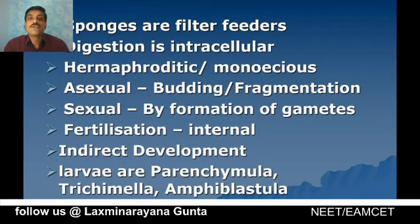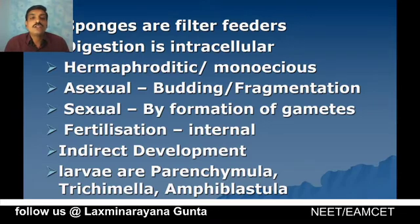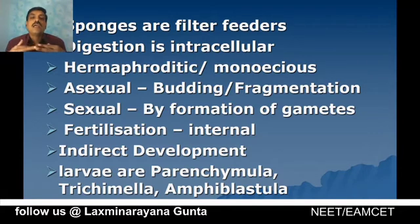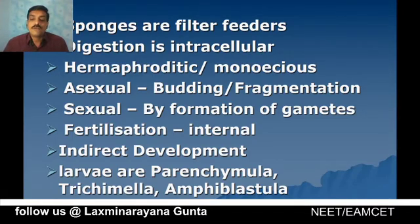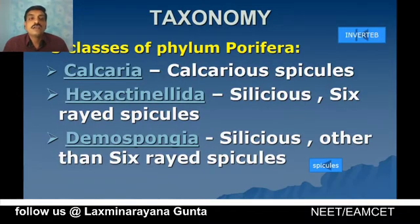Sponges are hermaphroditic or monoecious, meaning both sexes are present in the same individual. Asexual reproduction takes place by fragmentation and budding. Sexual reproduction occurs by the formation of gametes. Fertilization is internal and development is indirect, involving different types of larvae like parenchymula, trichimella, and amphiblastula, which are morphologically dissimilar from the adult.